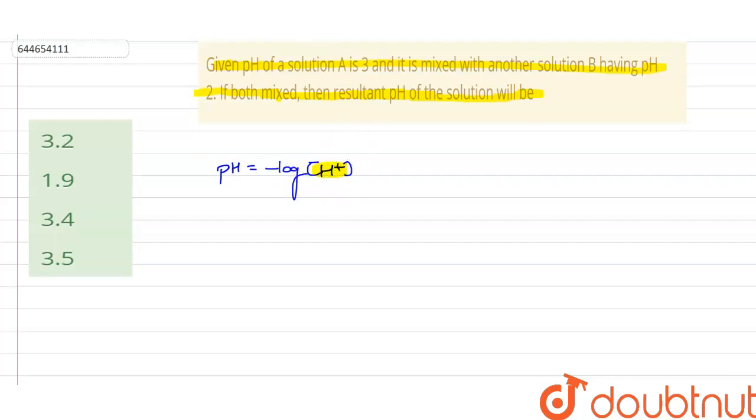Molarity is defined as the number of moles of solute dissolved per liter of solution. This is the formula of the molarity, which is a form of concentration and its unit is mole per liter.